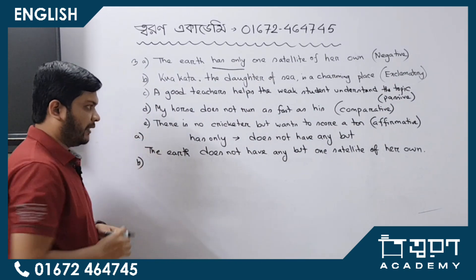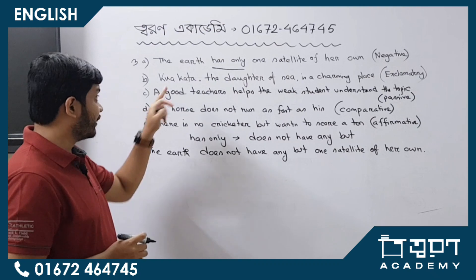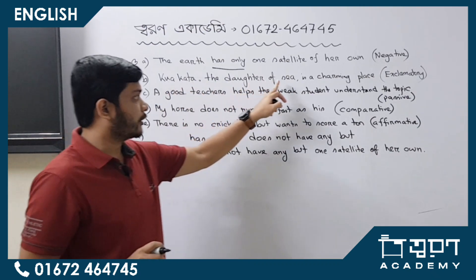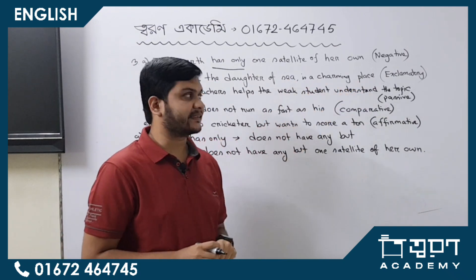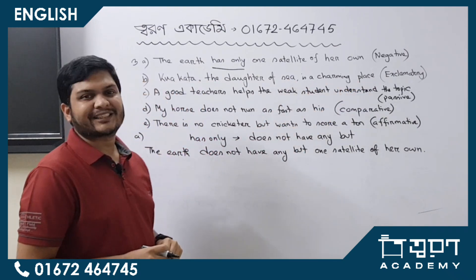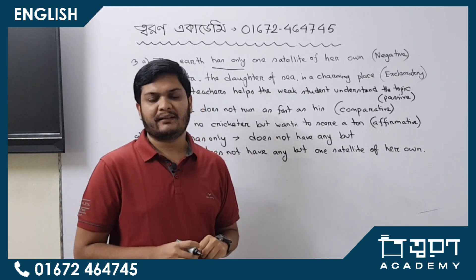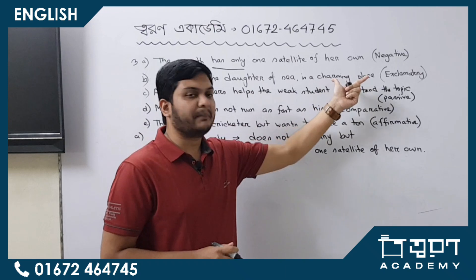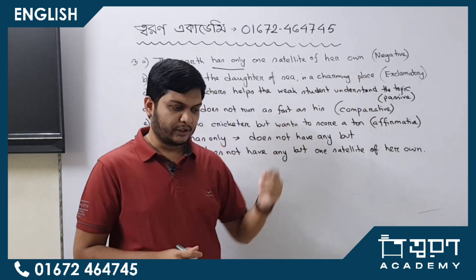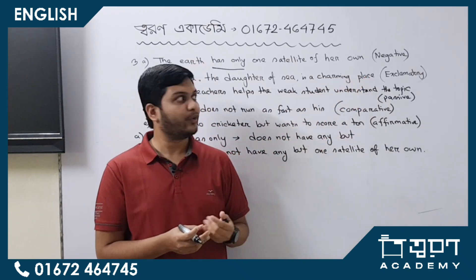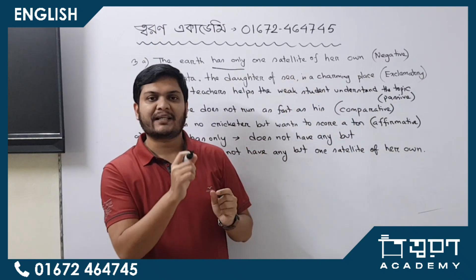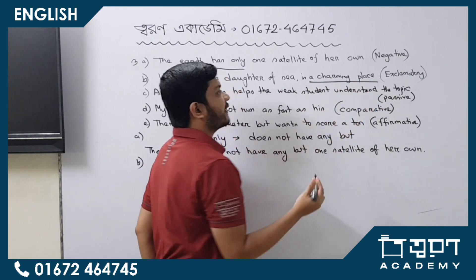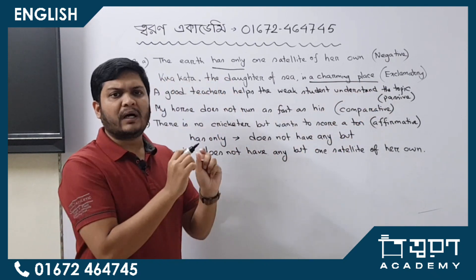The B number solution: 'The daughter of C is a charming place.' We need to do an exclamation transformation. What we have to keep in mind is that this is a charming place — this is the object. For the exclamation of the object, we use: 'What a charming place!'